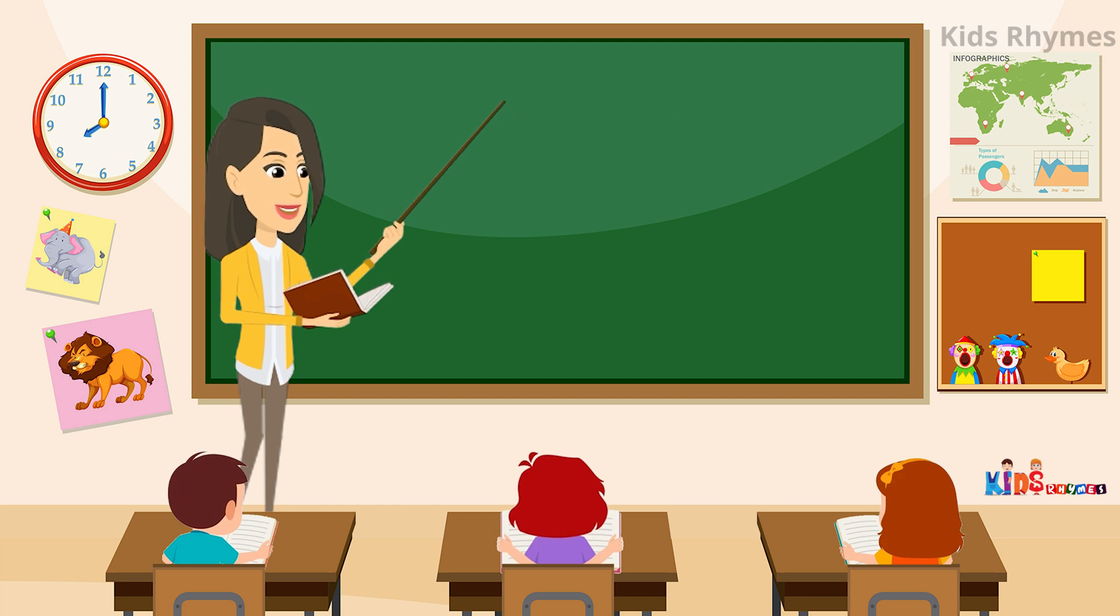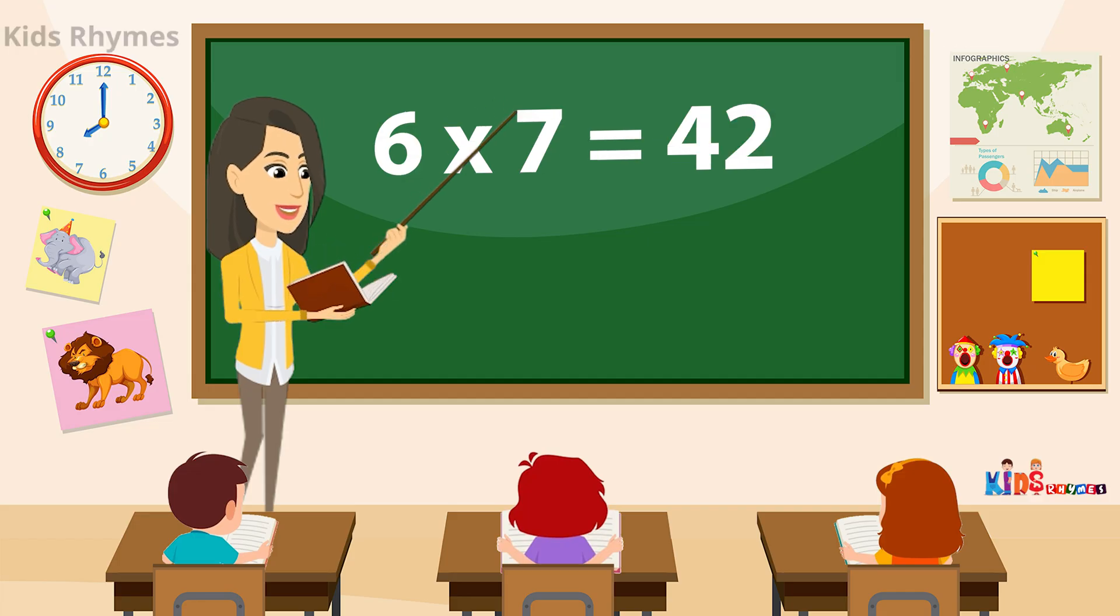Moving to the next. Six into seven is equal to... The answer is forty-two.